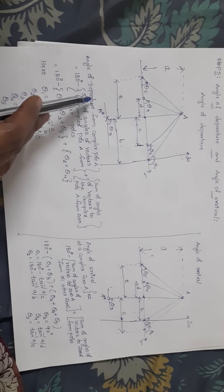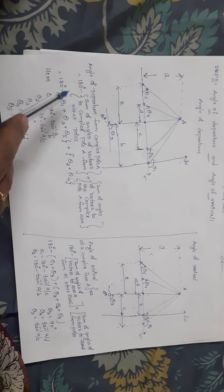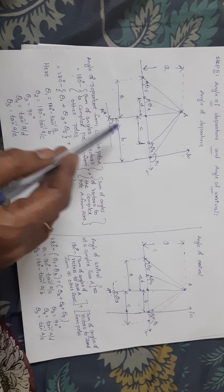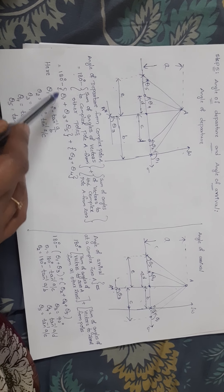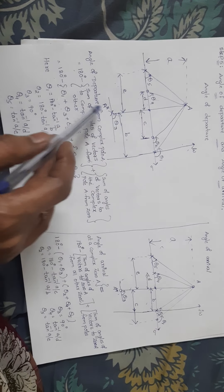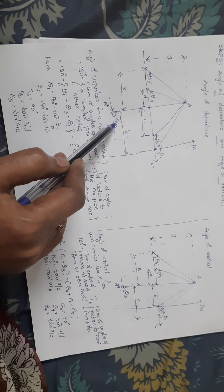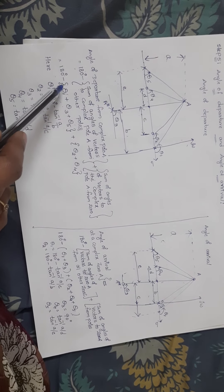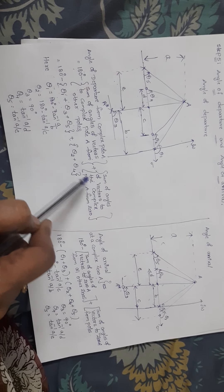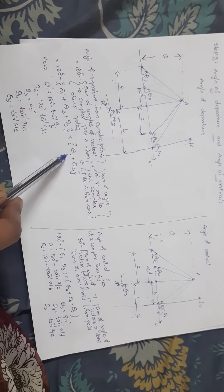Now, how to calculate the angle of departure from complex pole A? The formula is: 180 degrees minus the sum of angles of vectors to complex pole A from all other poles, plus the sum of angles of vectors from all zeros to pole A. So if there are poles with angles theta 1, theta 3, theta 5, and zeros with angles theta 2, theta 4, you write: 180° − (theta1 + theta3 + theta5) + (theta2 + theta4).